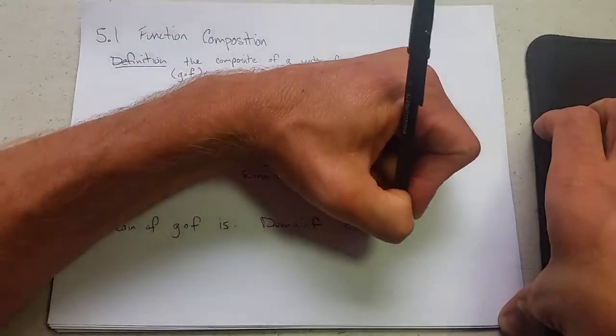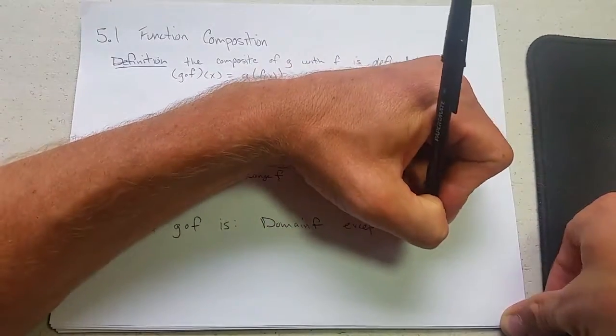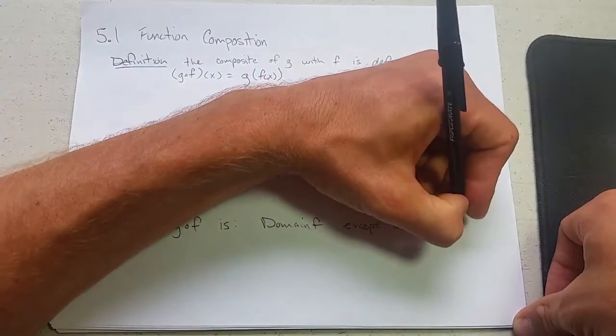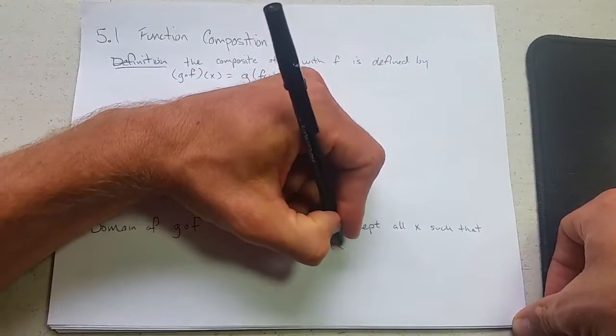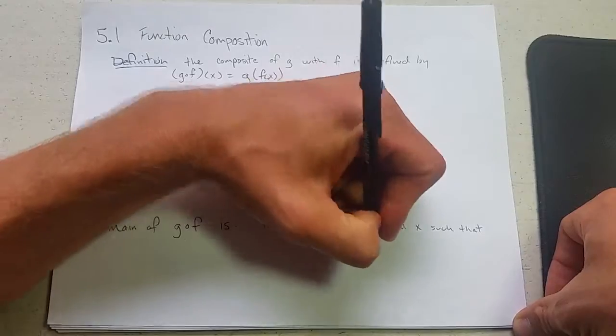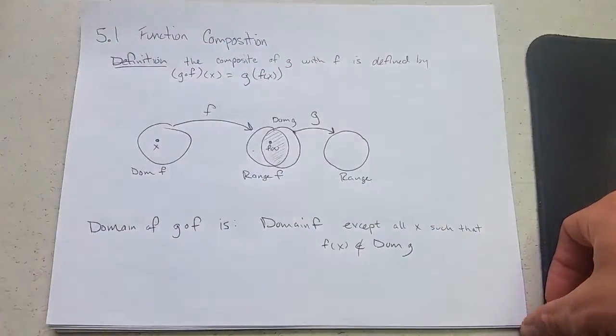all x such that f of x is not in the domain of g. So it's all x's here such that when you f them, they're not in the domain of g.